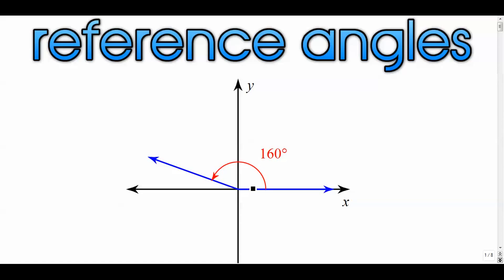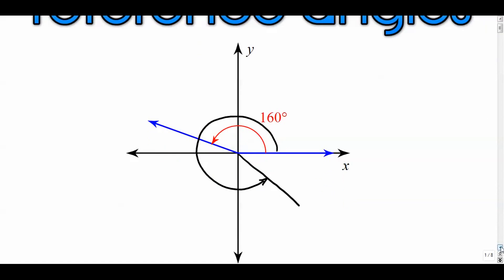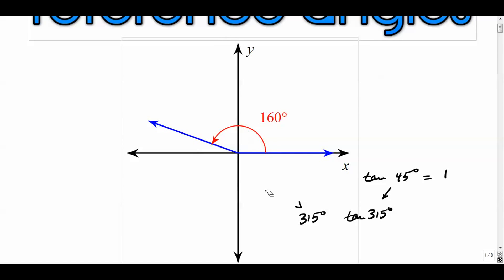For example, if I ask you for the tangent of 315 degrees, you don't want to work directly with 315. Instead, we find something easier to work with — the reference angle, which would be 45 degrees. So we just find the tangent of 45 degrees and then determine whether the result is positive or negative. Reference angles are an important way to make more challenging problems easier.